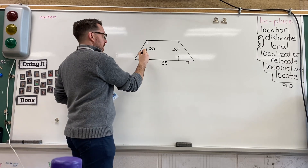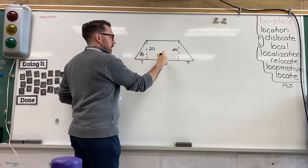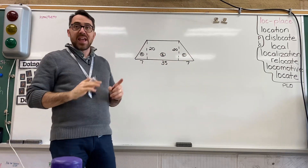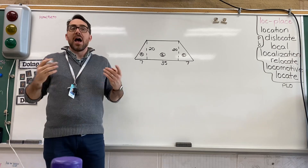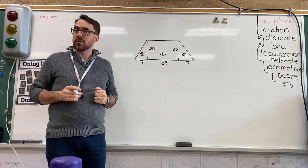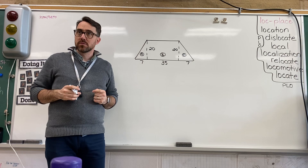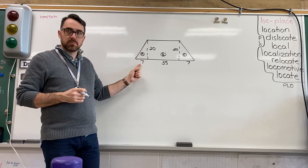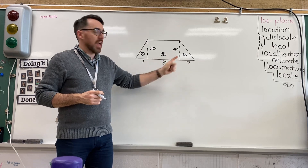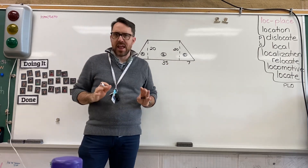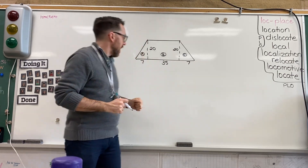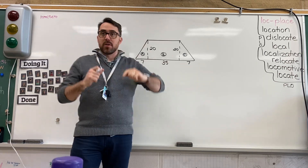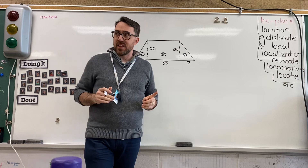I'm going to label the sections. I'll call it A, I'll call this B, and I'll call this C. I know that A and C are the same. How do I know that, Curtis? Because the base on that little triangle is the same on both sides and the height is the same on both sides. Absolutely, Curtis. Great answer. So A and C are the same.